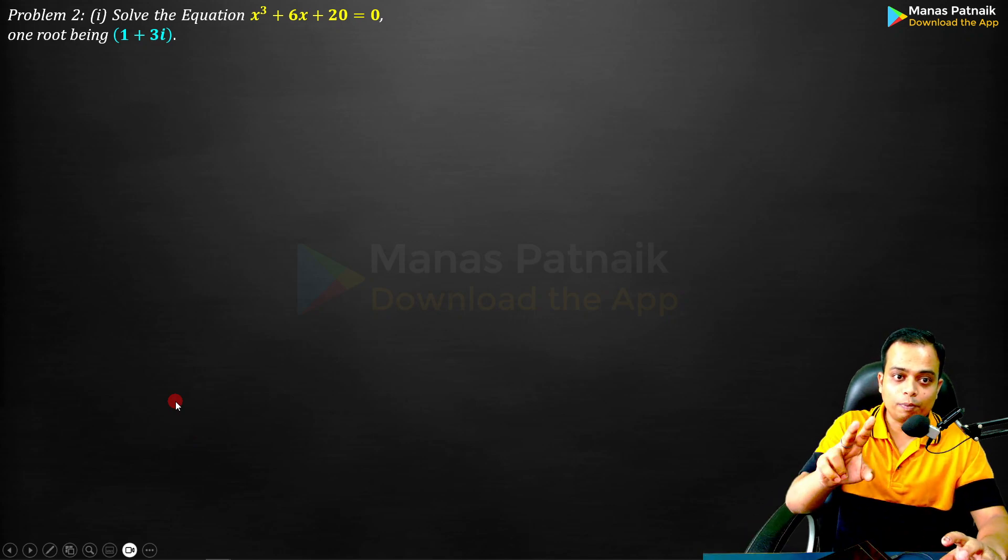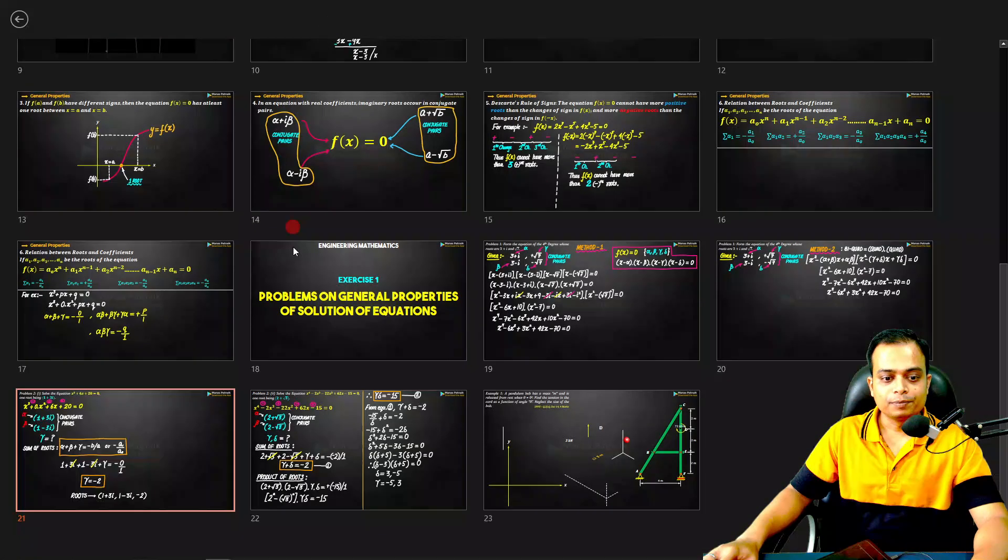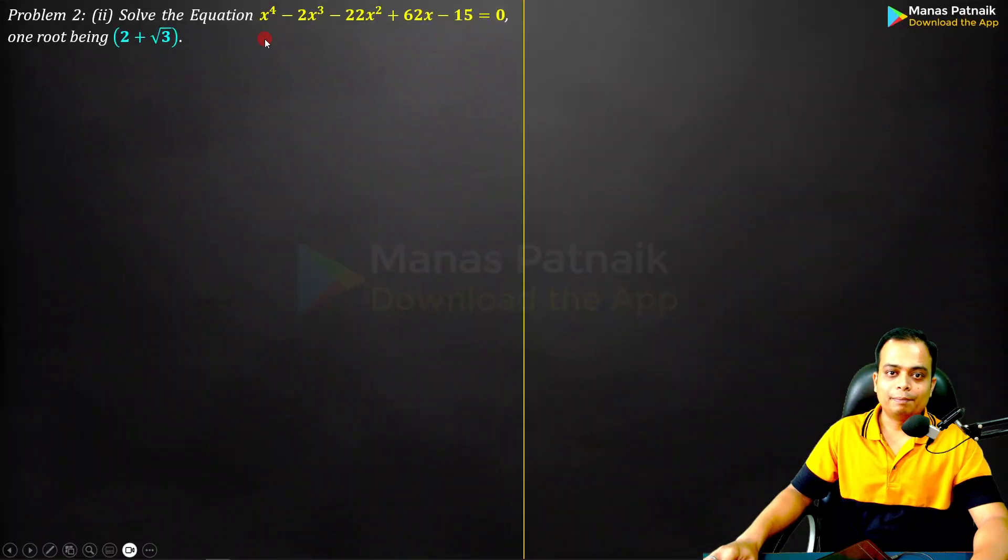Problem two has two parts. In the first part, we are dealing with a cubic equation. In the second part, we deal with a bi-quadratic equation.